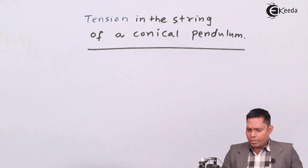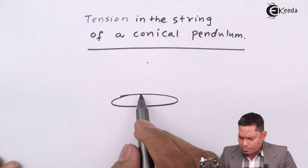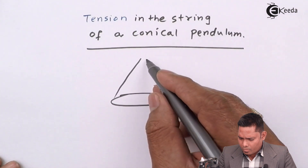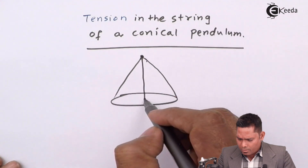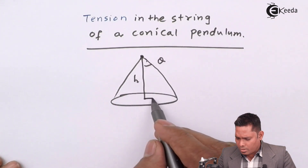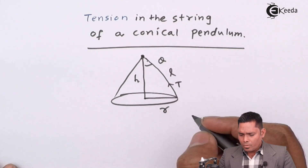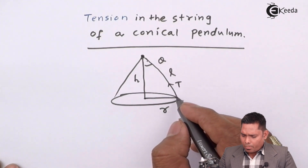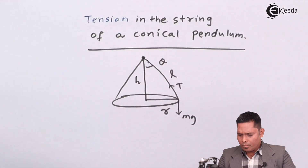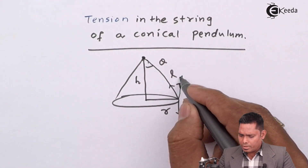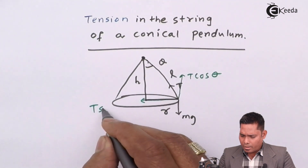We last time discussed that in the case of a conical pendulum, this is the point of suspension and this is the height h, this angle is theta, this is the radius, this is the length of the string, and the tension developed here is T. We resolve T into two components: the weight acts downward, this component is T cos theta, and this component is T sin theta.